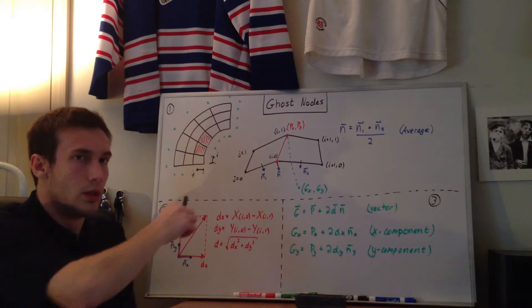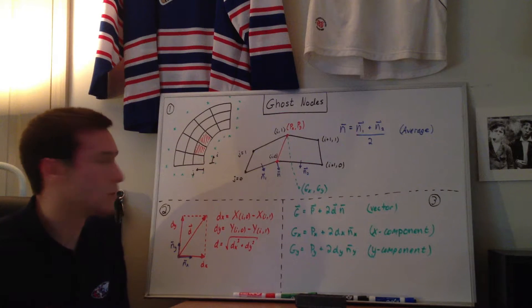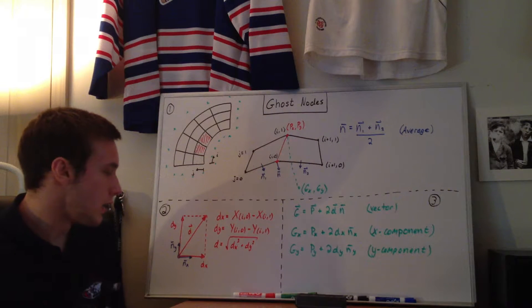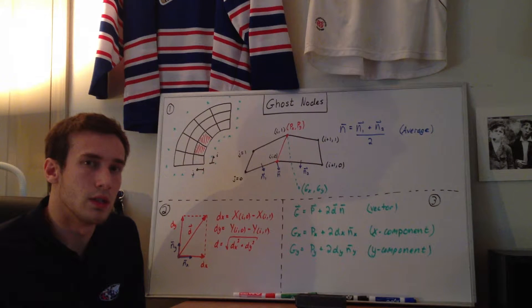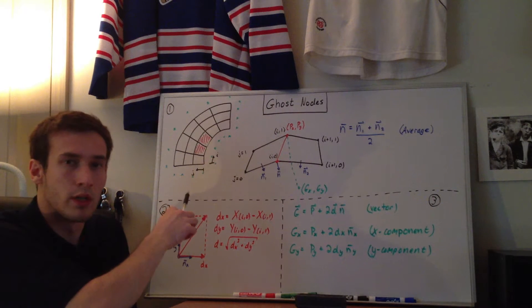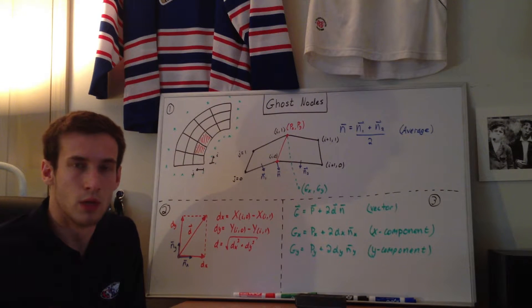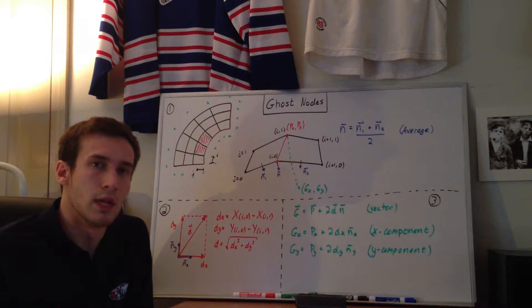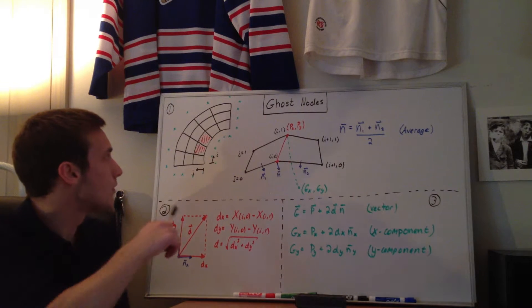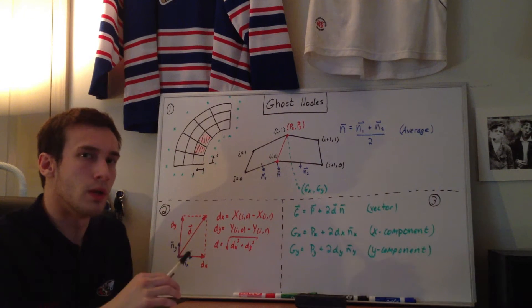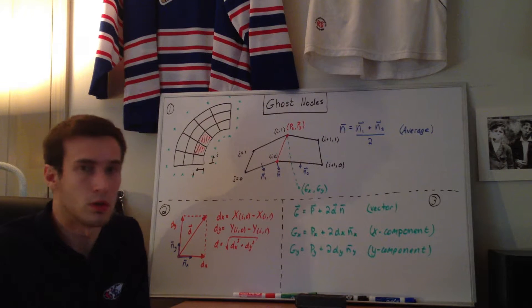So again, we have a grid, and the grid is specified using x and y coordinates at each of these points, at each of these i, j locations. So that's all known — we have all that information. Why do you need ghost nodes? One reason is when you have a curvilinear grid, you need to transform it to a uniform rectangular grid before you start solving the equations. You need metrics of the transformation, which I went over in another video. Ghost nodes are one of the ways to get the metrics on the boundaries. The way I went over in my other video was using a second-order one-sided difference, but you can also use ghost nodes.